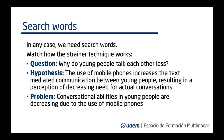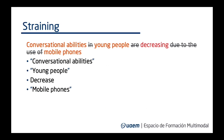Or expressed as a hypothesis: the use of mobile phones increases text-mediated communication between young people, resulting in a perception of decreasing need for actual conversations. Or expressed as a problem: conversational abilities in young people are decreasing due to the use of mobile phones. We chose the third sentence. The strainer technique is to take out the prepositions, articles, conjunctions, adjectives, or any other word you don't consider essential. In this case, we kept four search terms: 'conversational abilities' — used with quotation marks as a unit — 'young people' also as a unit, the verb 'decrease,' and 'mobile phones' also as a unit.